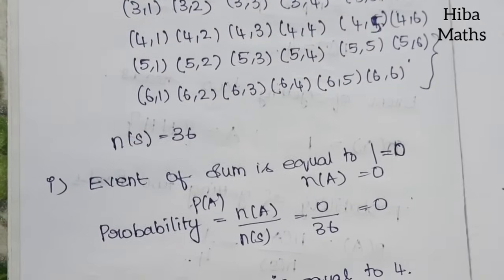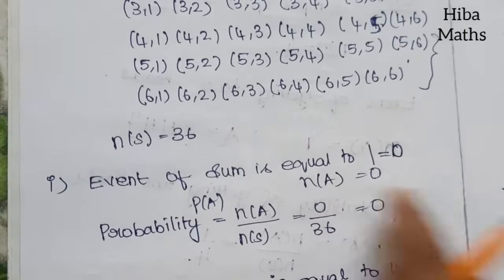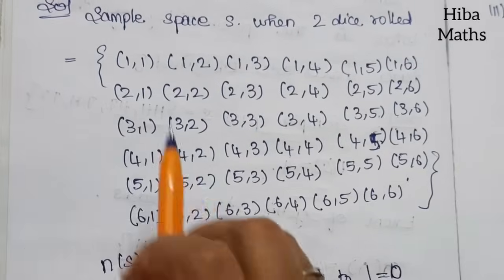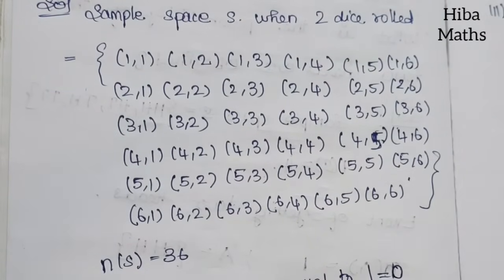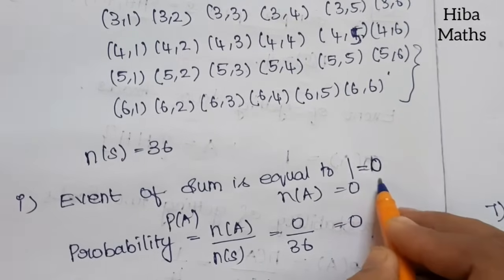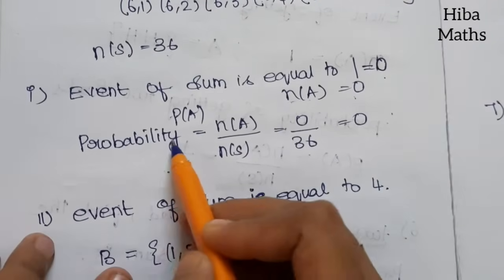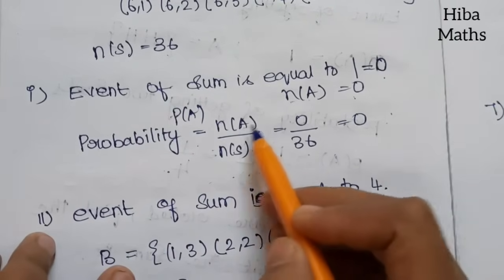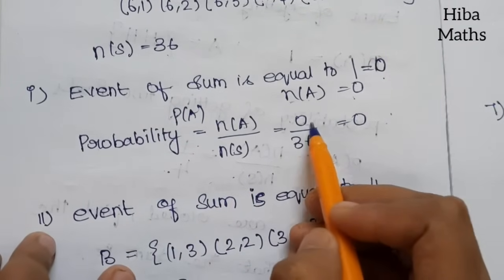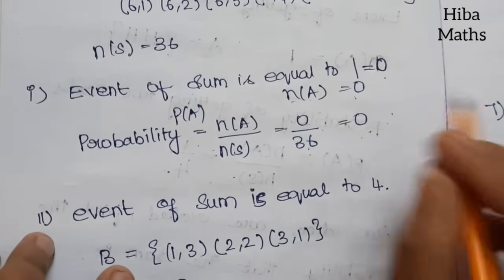First event: sum equals 1. The minimum sum from two dice is 1 plus 1 equals 2, so a sum of 1 is impossible. n of A equals 0, and probability P of A equals 0 by 36 equals 0.